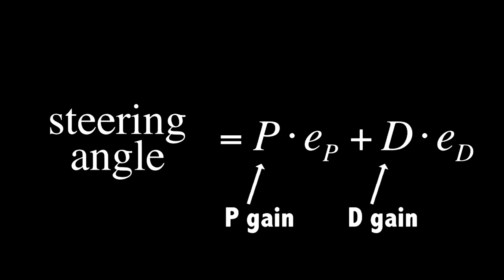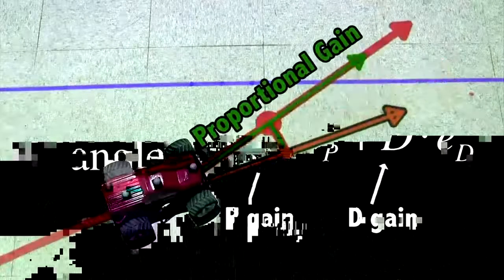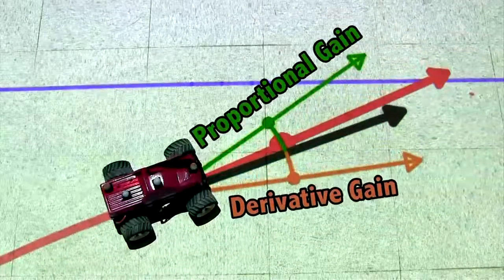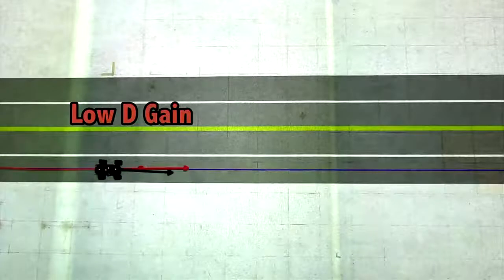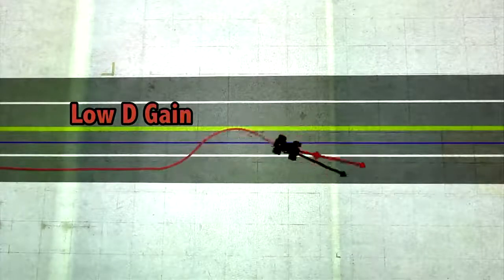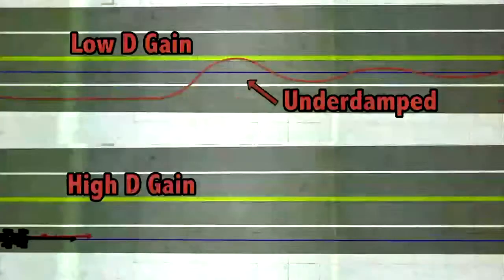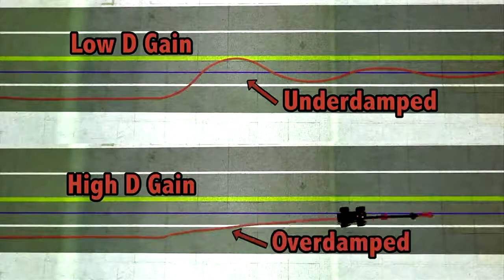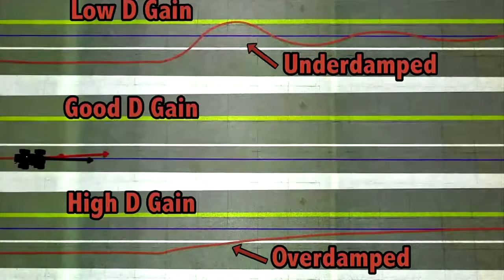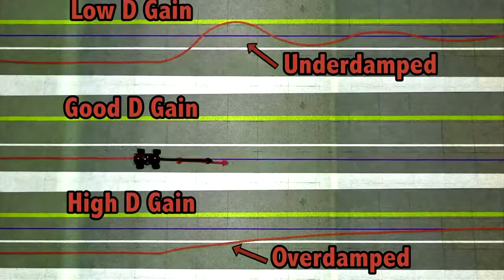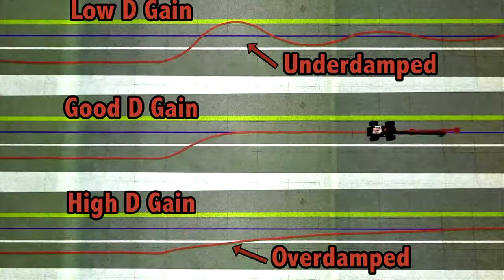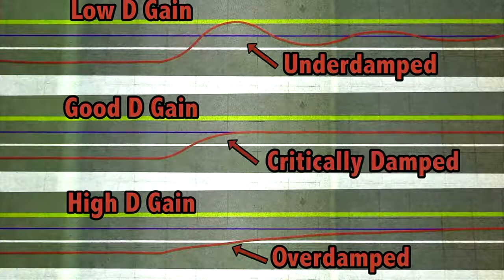This rate term is called the derivative term in control theory. It can be multiplied by its own gain and added to the proportional term. Increasing the proportional gain increases the pull toward the desired trajectory; increasing the derivative gain increases resistance against moving too quickly toward the line. If derivative gain is too low, the system is underdamped and oscillates; if too high, it is overdamped and takes too long to correct. Properly chosen, this is called critically damped.